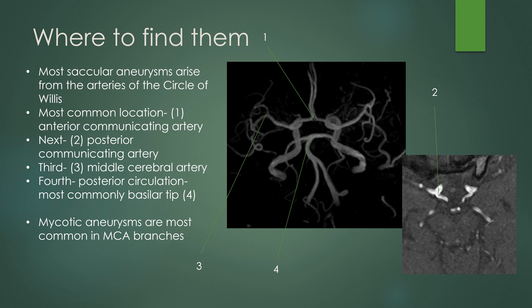Most saccular aneurysms arise from the arteries of the Circle of Willis. The most common location is the anterior communicating artery. The second most common is the posterior communicating artery. The third is the middle cerebral artery bifurcation or trifurcation. The fourth is the posterior circulation, with the most common of those being at the basilar tip.